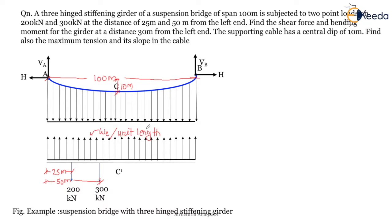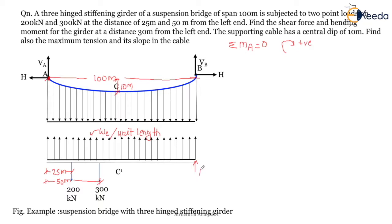Because of the hangers or suspenders there is a UDL w_e per unit length acting, and we have to find what this w_e is. First, calculate the reactions at A and B. Similar to a simply supported beam, consider moment about one support and summation of forces in the vertical direction.